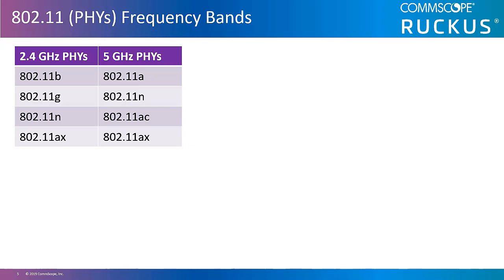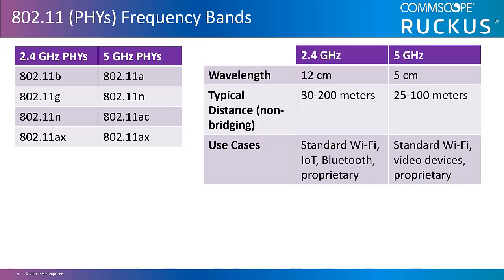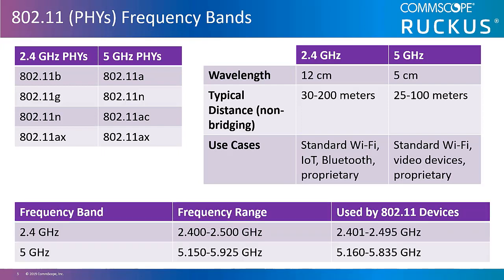Some PHYs can use both 2.4 and 5 gigahertz, such as 802.11n and 802.11ax. The range of RF communications shortens as frequency raises. The distance a signal can travel and remain useful is directly related to the power or amplitude of the signal output of the transmitter. Typical distances are impacted in all bands by output power, receiver sensitivity, and antenna gain. Signals transmitted at lower frequencies use less power to travel the same distance as signals using higher frequencies.